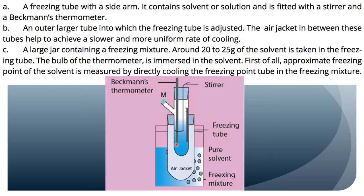We weigh the freezing tube on the weighing balance, then add the solvent. We subtract the weight of the empty freezing tube from the total weight to get the weight of the solvent. This gives us 20 to 25 grams of solvent in the freezing tube.